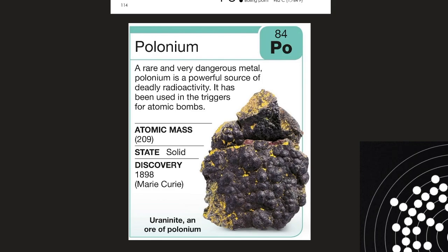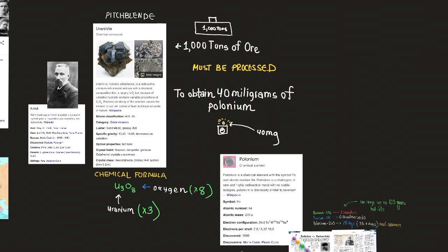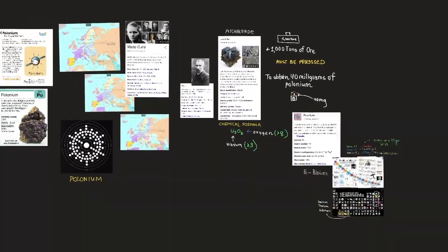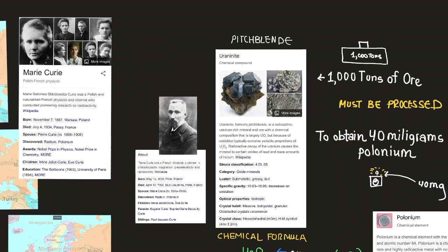Here we have uranite and ore of polonium. This is for reference and educational purposes. So polonium, a radioactive silvery gray or black metallic element of the oxygen group, or group 16 in the periodic table. The first element to be discovered by radiochemical analysis, polonium was discovered in 1898 by Pierre and Marie Curie, who were investigating the radioactivity of a certain pitchblend, a uranium ore.